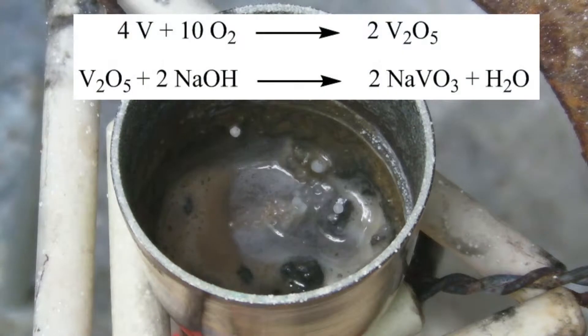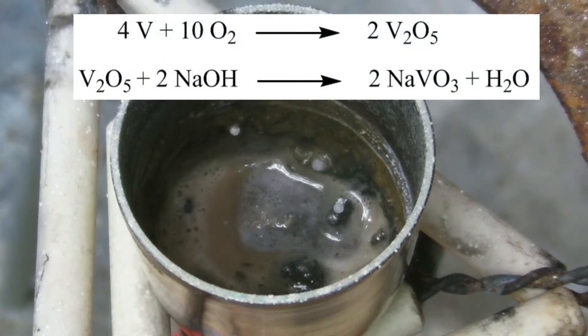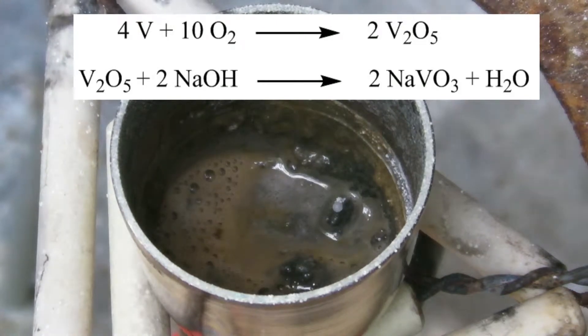The vanadium is oxidized by the oxygen from the air, so vanadium 5 oxide is formed. This can react with the sodium hydroxide to form sodium metavanadate.